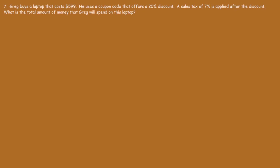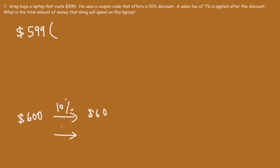Now let's move on to number seven. Greg buys a laptop that costs $599 and uses a coupon code offering a 20% discount. A sales tax of 7% is applied after the discount. What is the total amount Greg will spend? First, we need to find 20% of $599. For reference, 10% of $600 is $60, so 20% of $600 is $120 — and 20% of $599 is just under $120. Multiplying $599 by 0.20 gives $119.80.